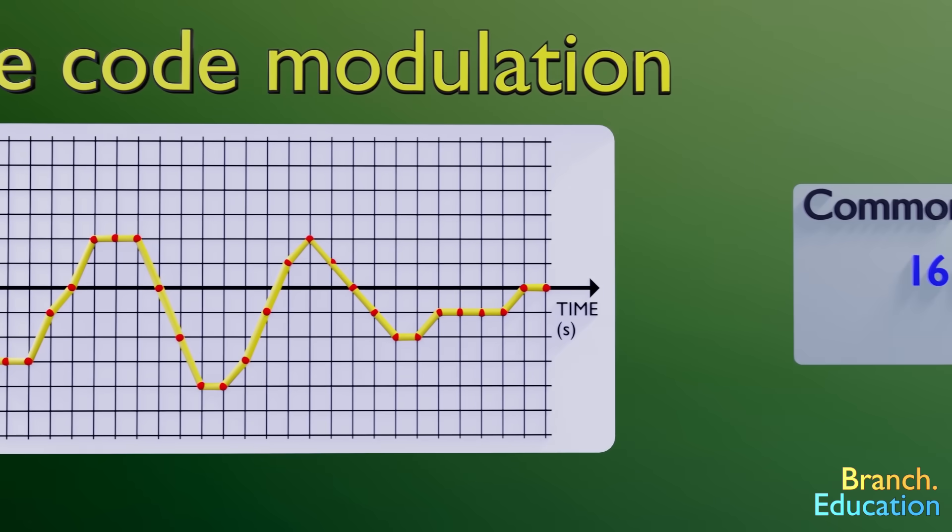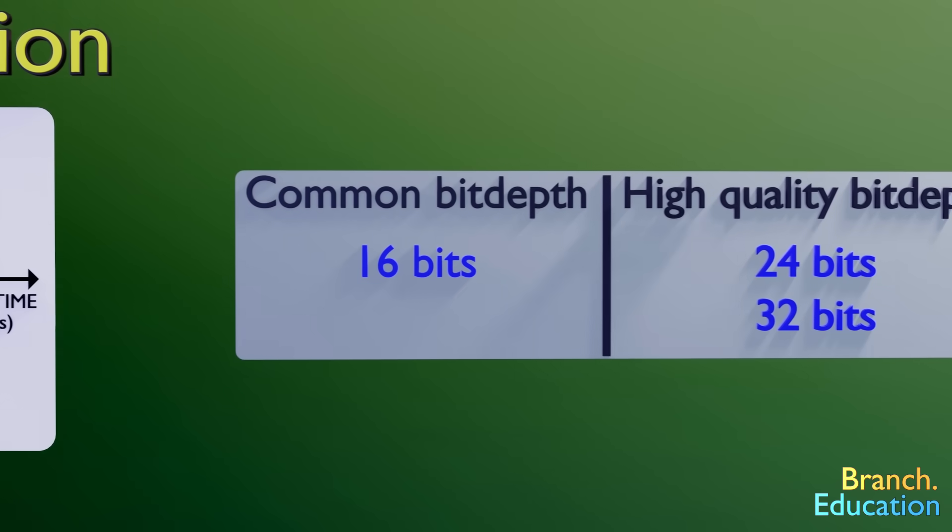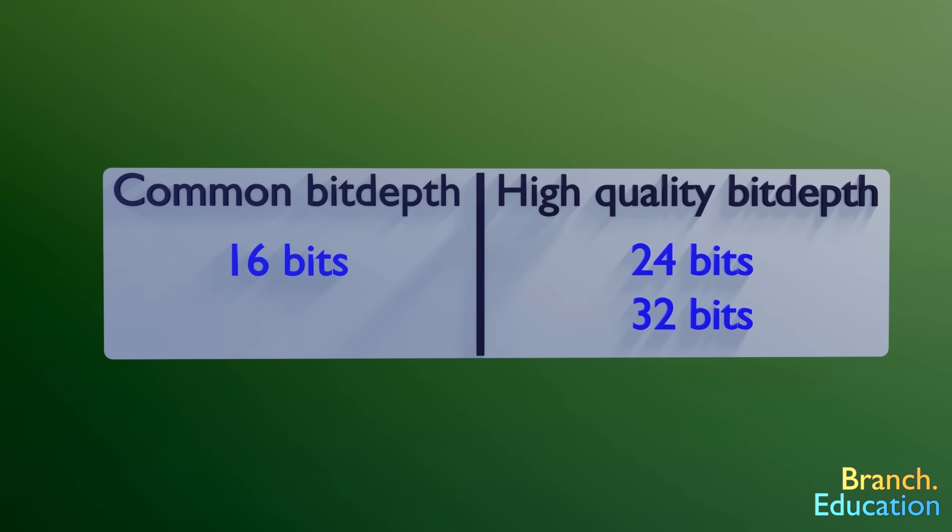Furthermore, an audio bit depth of 16 bits is pretty common. However, higher quality audio files use 24 or 32 bits per sample or higher.